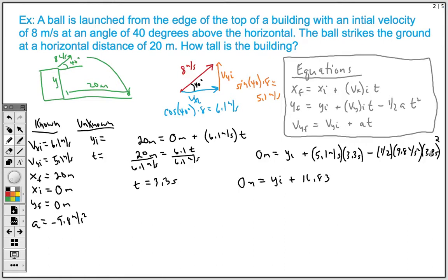1.5, 9.8, and 3.3 squared. Multiply all those. We end up with a negative 53.36. Forgive me for not using units here. So let's combine our terms. Zero equals yi. 16.83 minus 53.36 gives us a negative 36.53. I can guarantee you this is in all meters. So we're going to add this to both sides. We know that yi, so the height of the building, ends up being 36.53 meters.